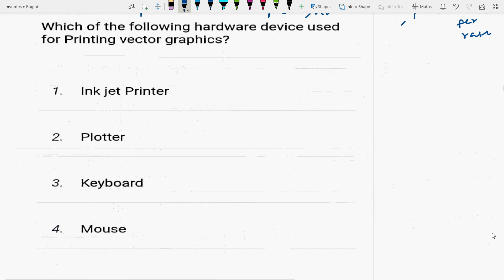Next question: which of the following hardware devices is used for printing vector graphics? Inkjet, printer, plotter, keyboard, or mouse? Plotter is a hardware device which is used for printing vector graphics.